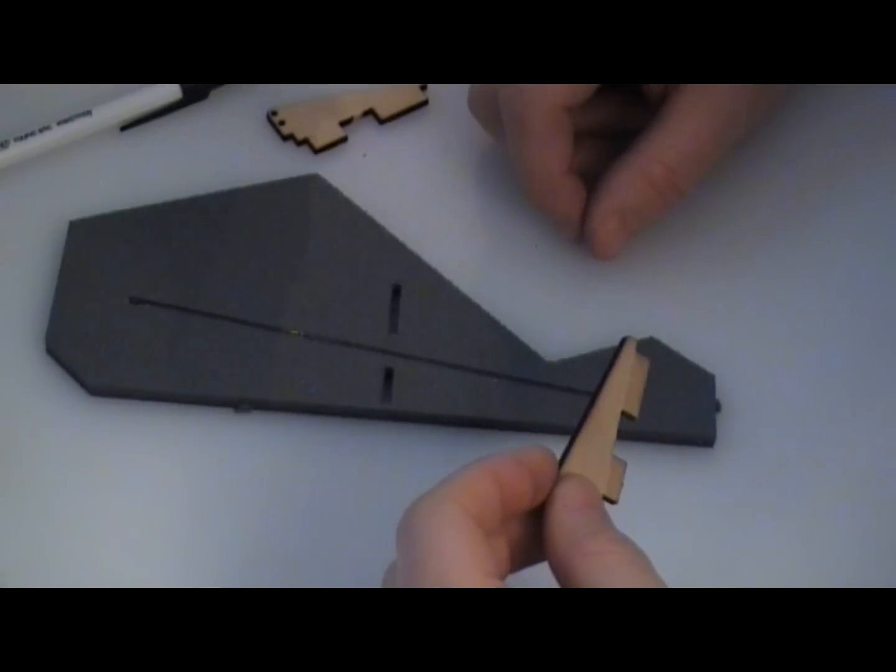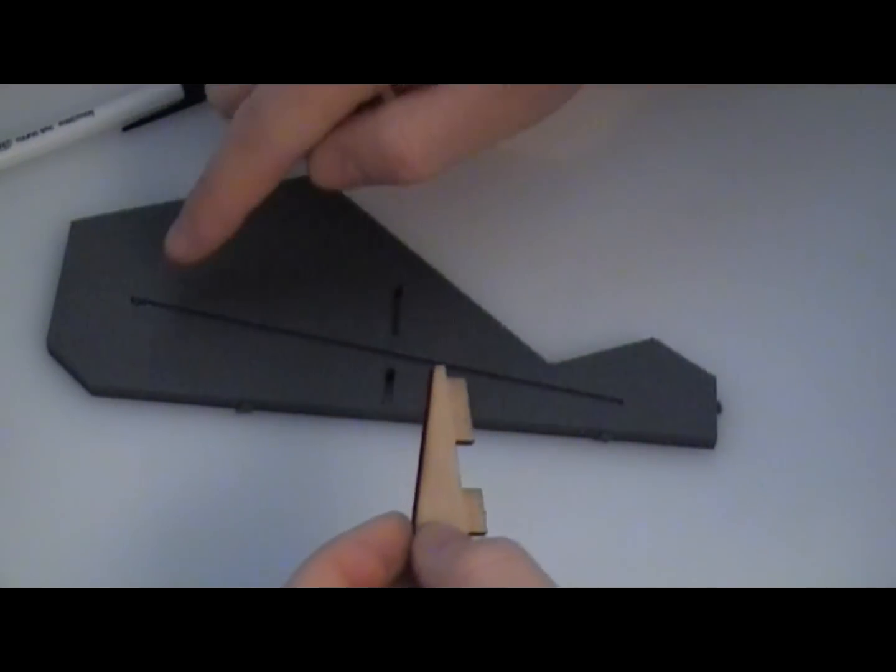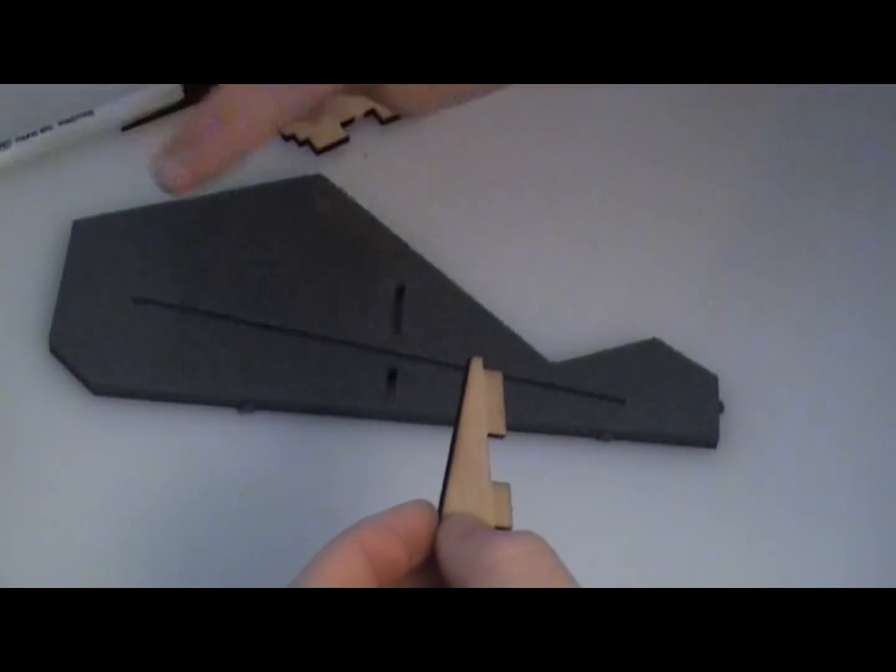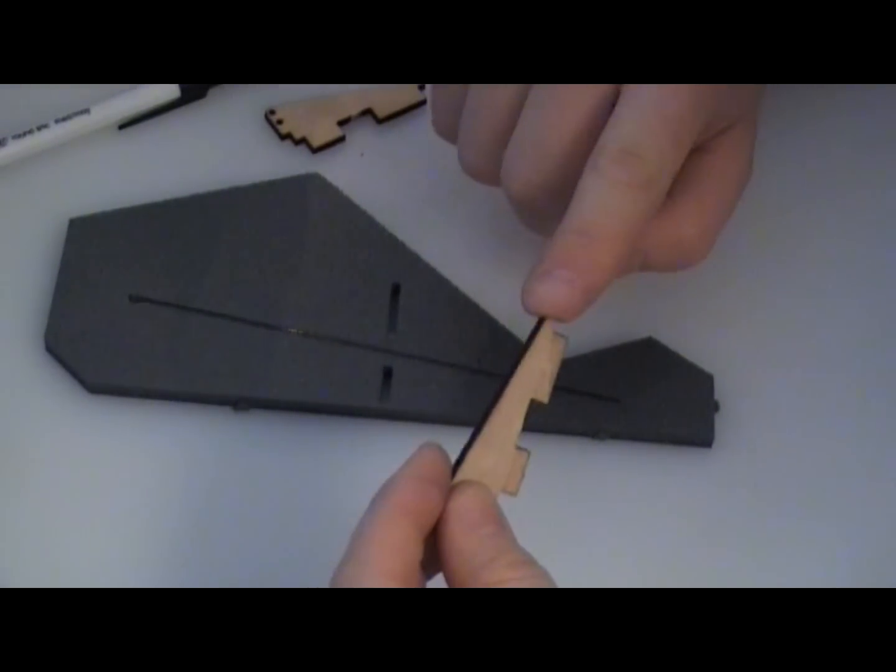Okay, now we're going to install the control horns. You'll notice that the carbon fiber strip is already installed into this Elevon. This is an F-22 Elevon. Make sure that you follow the sequence of instructions. You want to make sure that the carbon fiber is in before the control horn. If you put the control horn in before the carbon fiber, it's almost impossible to get the carbon fiber in there.